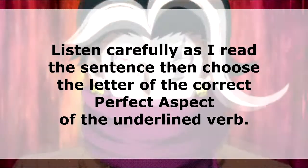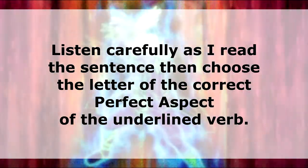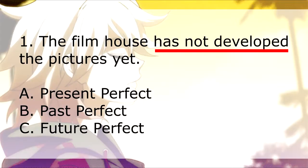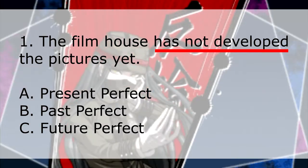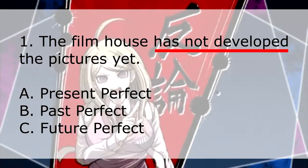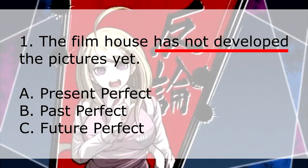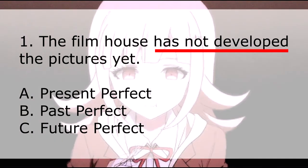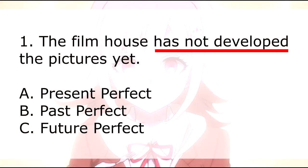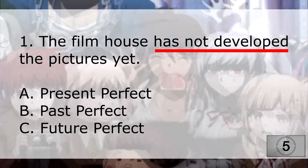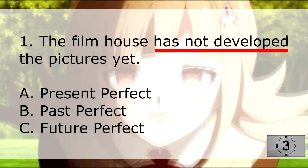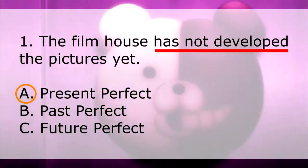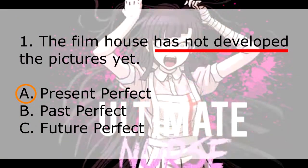Now let's try an activity. Listen carefully as I read the sentence, then choose the letter of the correct perfect aspect of the underlined verb. Question 1: 'The film house has not developed the pictures yet.' Which of the following is the correct perfect aspect — a) present perfect, b) past perfect, or c) future perfect? If your answer is A, present perfect, then you are correct.